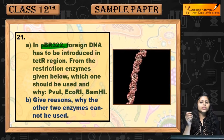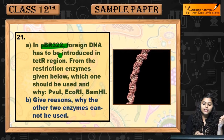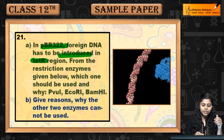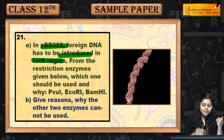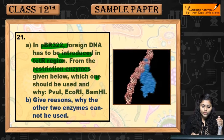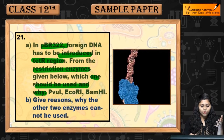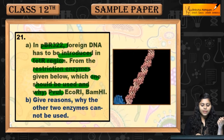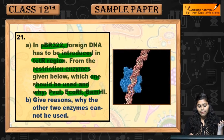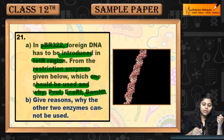In pBR322, foreign DNA has to be introduced in the tetR region. From the restriction enzymes given — PvuI, EcoRI, BamHI — which one should be used and why? सबसे पहले restriction enzymes क्या होते हैं?